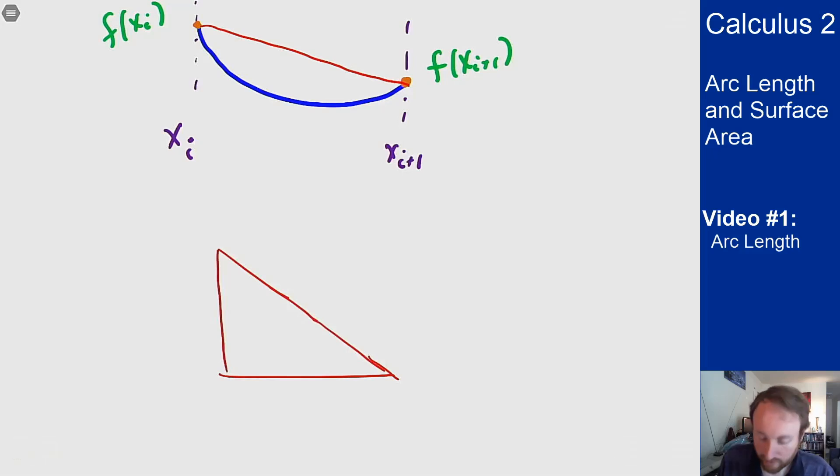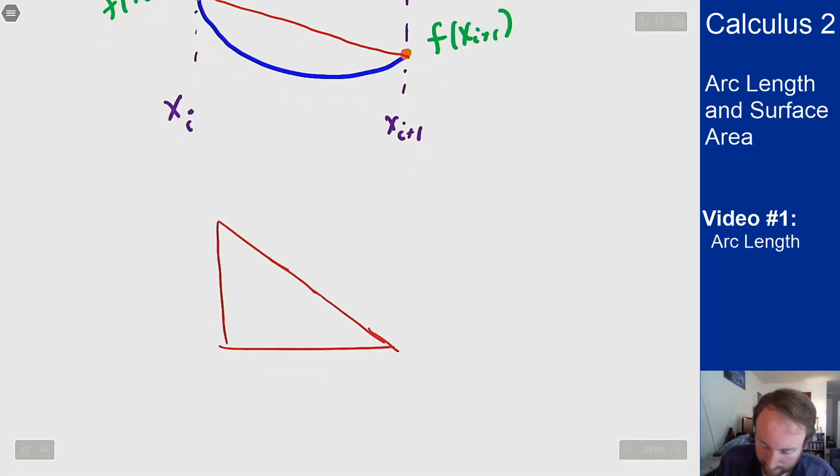What do I know about this triangle? The bottom side here is x_{i+1} minus x_i and the vertical side is f(x_{i+1}) minus f(x_i). We'll write this as delta x, and now I want to deal with the vertical side.